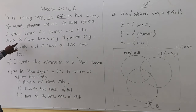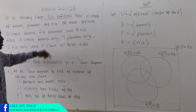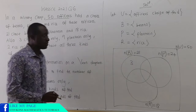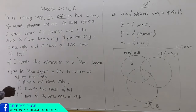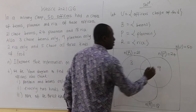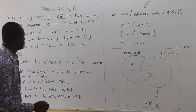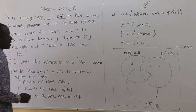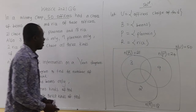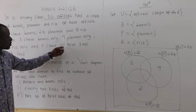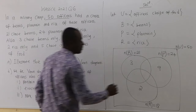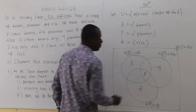Now, we have been told 3 chose beans only — that's here, that is 3. Nine plantain only — 9 plantain only. And then 2 rice only — that's here. And then we have been told 5 chose all three kinds of food, so 5 goes in the centre intersection.